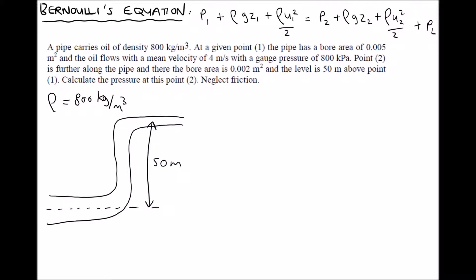The question also told us that at position 1, the area, so A1, was 0.005 meters squared. That's already in SI units. And it has a mean velocity, U1, at that point, of 4 meters per second. We're also given the pressure at position 1 of 800 kilopascals.